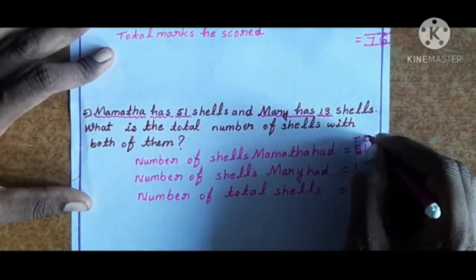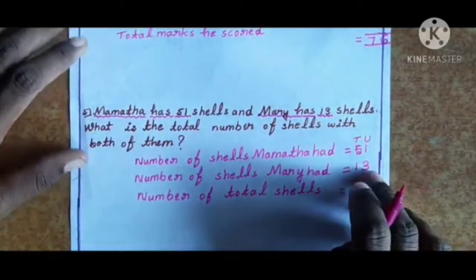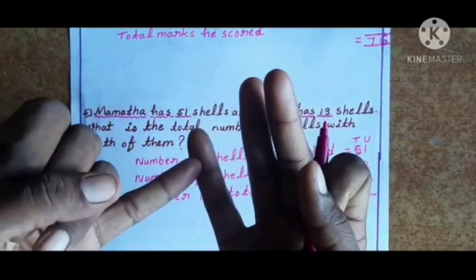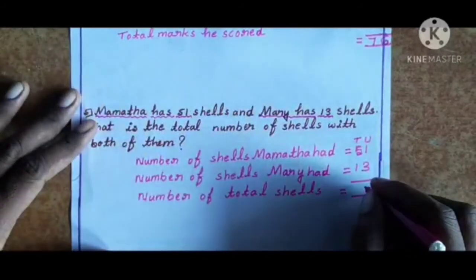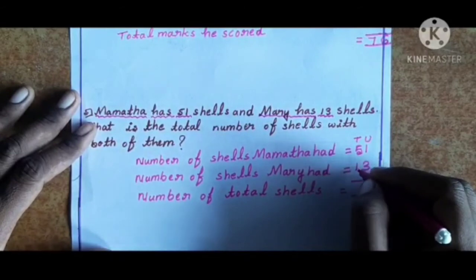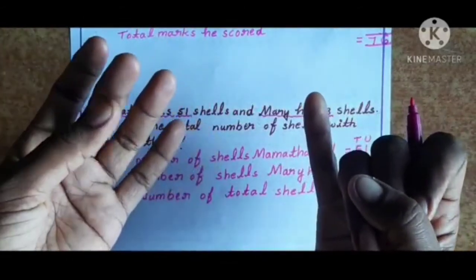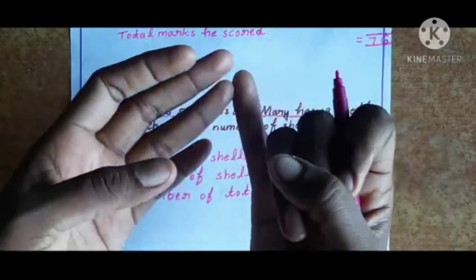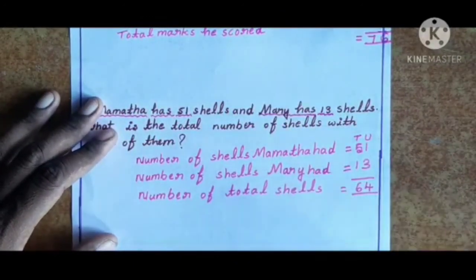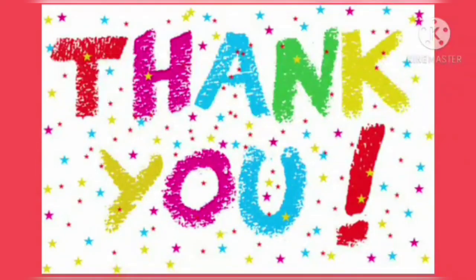First, add units: 1 plus 3. Count now: 1, 2, 3, 4. Next, 5 plus 1. Count now: 1, 2, 3, 4, 5, 6. So 5 plus 1 is 6. Total 64 shells. Thank you children.